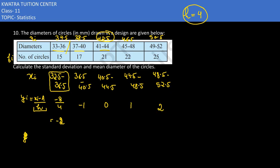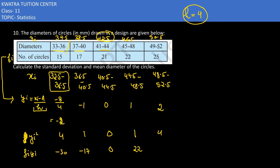Now take yi squared: (−2)² = 4, (−1)² = 1, 0² = 0, 1² = 1, 2² = 4. Next, multiply fi × yi: 15 × (−2) = −30, 17 × (−1) = −17, 21 × 0 = 0, 22 × 1 = 22, 25 × 2 = 50. Then fi × yi²: 15 × 4 = 60, 17 × 1 = 17, 21 × 0 = 0, 22 × 1 = 22, 25 × 4 = 100.